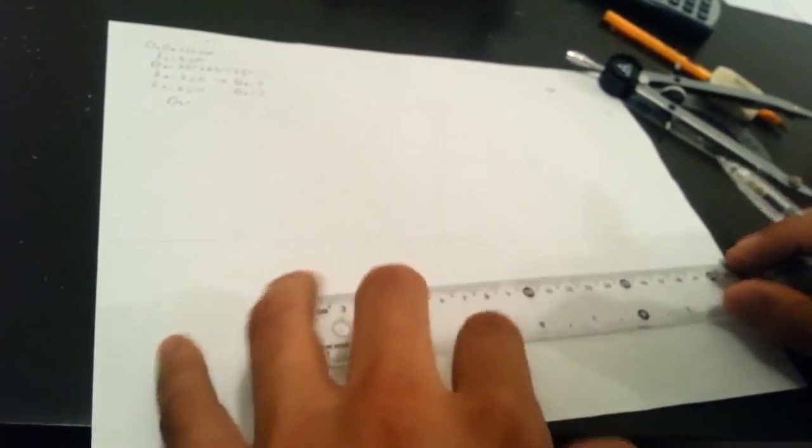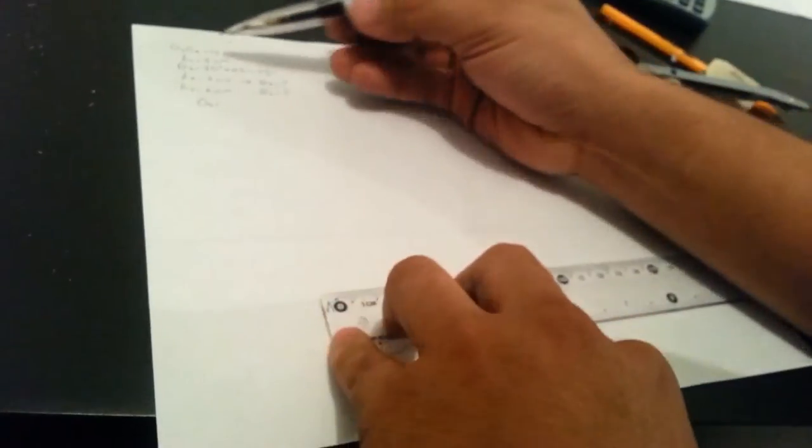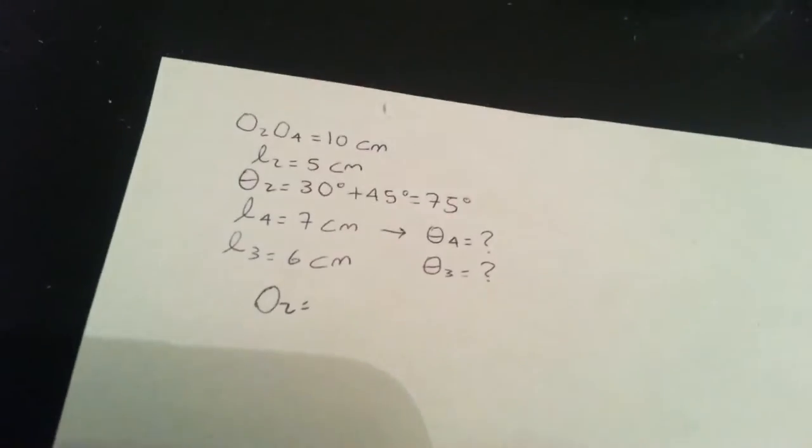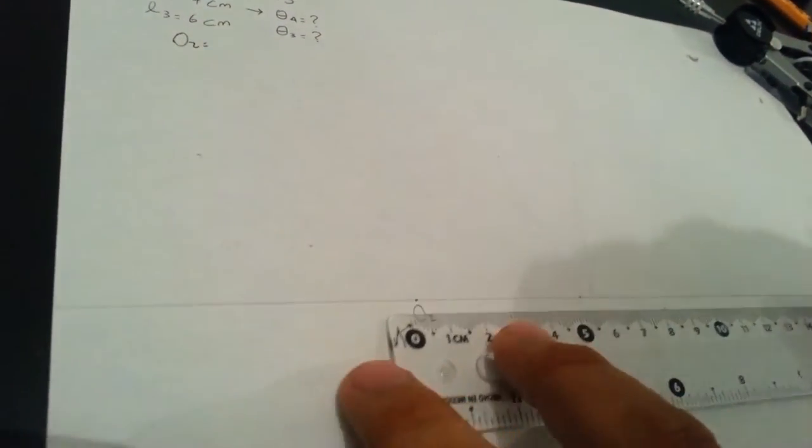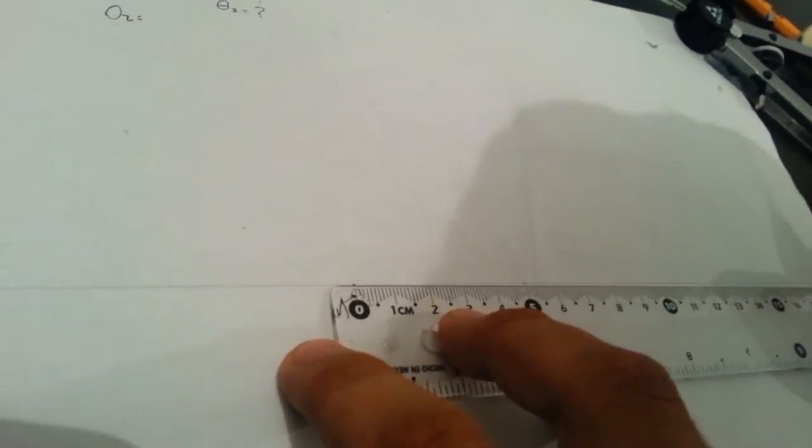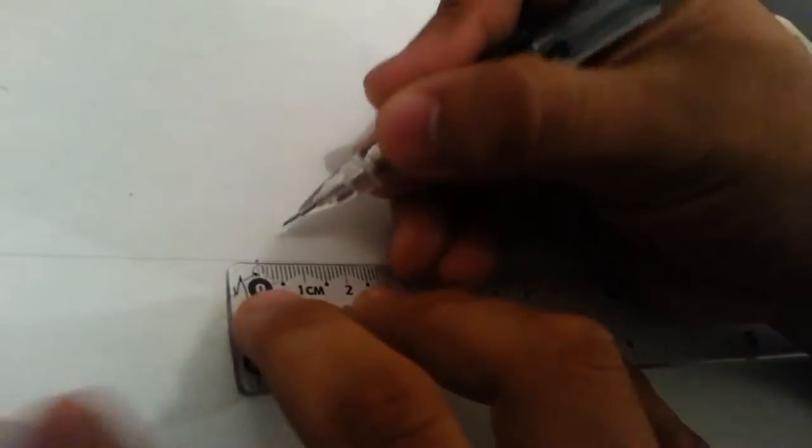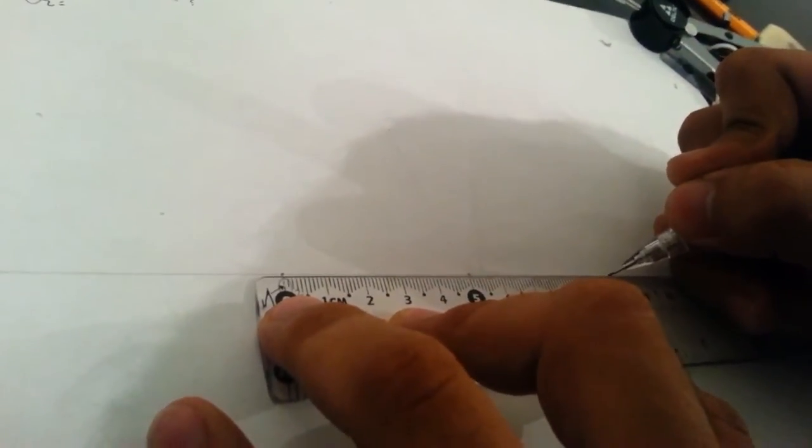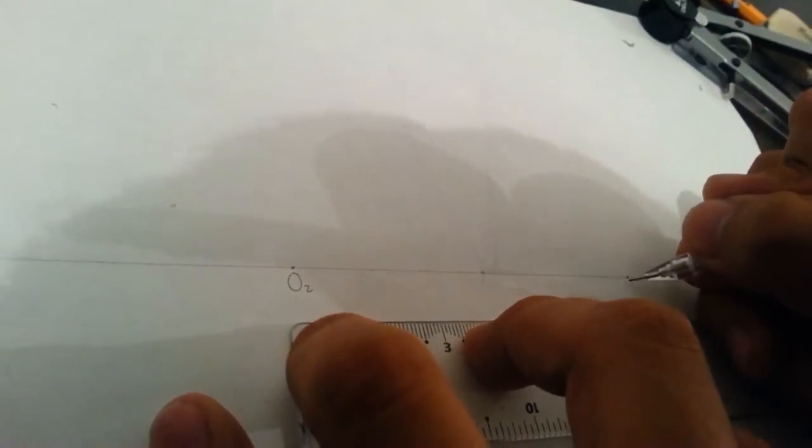Here we go. After, you have to do the point O2. Then, you have to measure 10 cm to draw the other point O4.